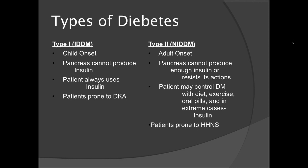Then there's Type 2 diabetes — non-insulin-dependent diabetes mellitus. This occurs in adulthood. It's when the pancreas cannot produce enough insulin, or the body resists the actions of the naturally produced insulin. The patient controls diabetes mellitus with diet, exercise, and oral pills. In some extreme cases, insulin is necessary. These patients are prone to HHNS, or hyperosmolar hyperglycemic non-ketotic syndrome.